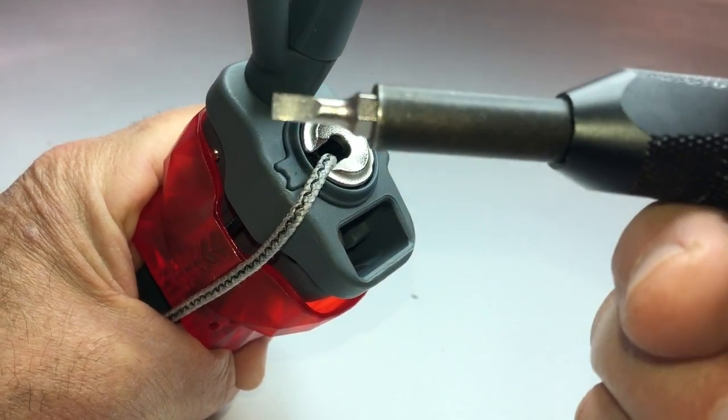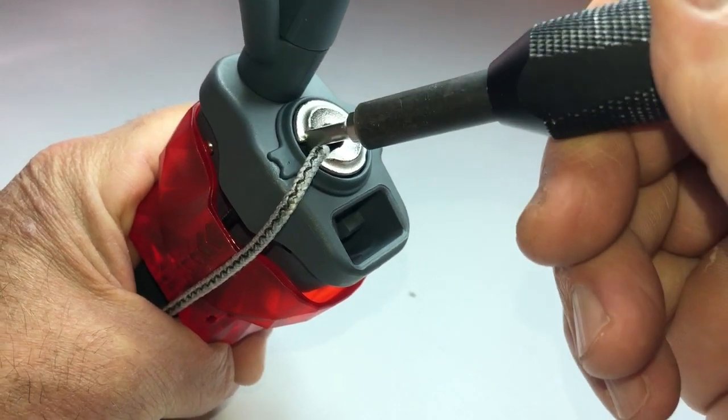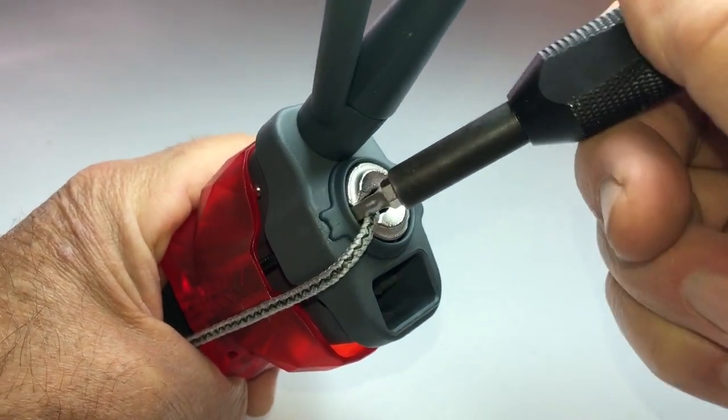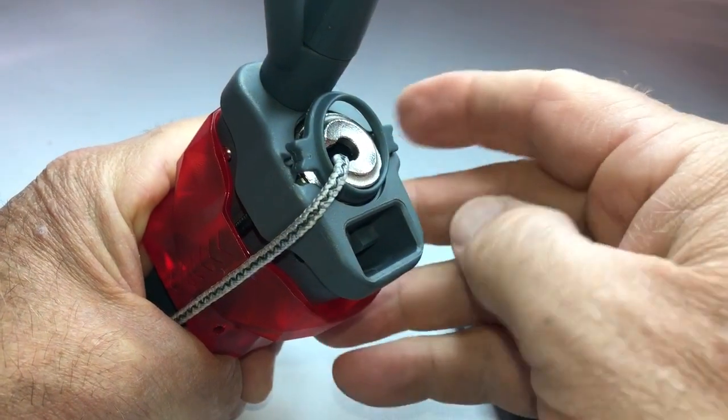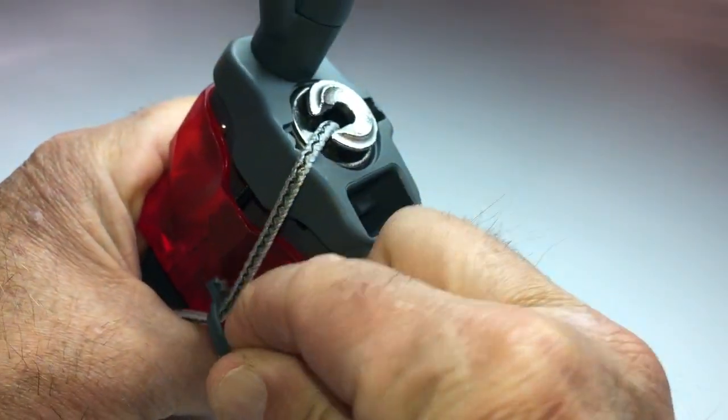Using a flat head screwdriver, get in underneath the sand seal and pop it off. Pull the seal out of the way as well.